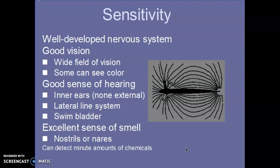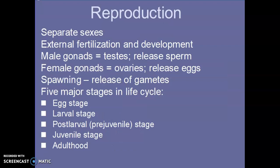Sensitivity — remember that lateral line system that sharks have? Fish have the same thing. They do not have the ampullae of Lorenzini, however. But they do have a well-developed nervous system and good vision — some fish can actually see color. They have a good sense of hearing because they have internal ears. Their swim bladder can also sense vibrations. And they have nostrils, so they can detect small amounts of chemicals and swim away from them if they need to.